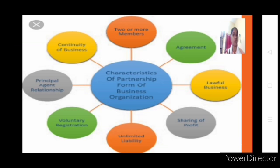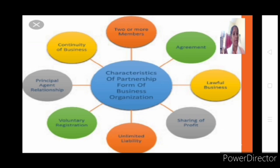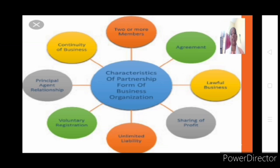Some partners may only contribute capital, bear the loss if any, and enjoy the profit, without directly involving themselves in the day-to-day affairs of the business. In that case, one partner like A takes an active part in the business, acting on behalf of all. When profit comes all five share it; when there is a loss all five bear it. So it can be one person acting for all, or everyone acting for all — that is what we call mutual agency. Every partner becomes agent and every partner becomes principal.